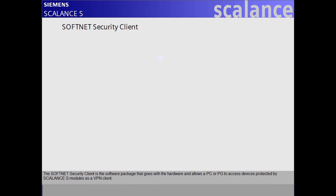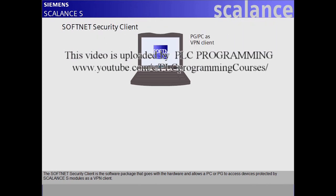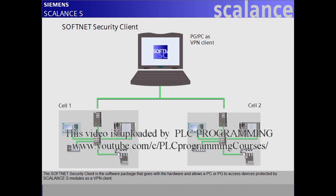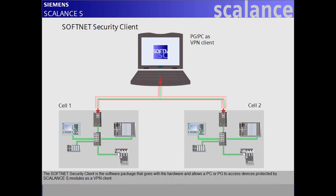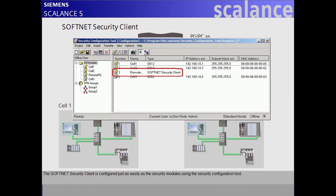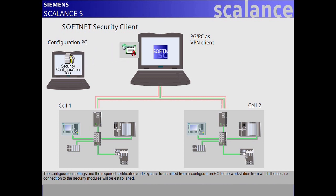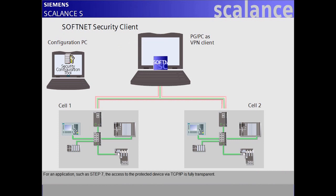The SoftNet Security Client is the software package that accompanies the hardware and allows a PC or PG to access devices protected by Scalance S modules as a VPN client. It is configured just as easily as the security modules using the Security Configuration Tool. The configuration settings and the required certificates and keys are transmitted from a configuration PC to the workstation from which the secure connection to the security modules will be established. For an application such as Step 7, the access to the protected device via TCP/IP is fully transparent.